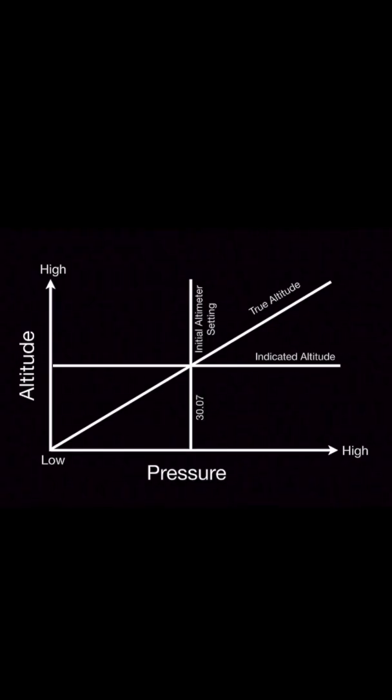The destination altitude setting was 29.95, lower than the initial setting. So we'll draw a new line to the left of the initial setting line. We can now see that if the new pressure is lower than the original pressure, true altitude will be lower than indicated altitude. Or put another way, the airplane will be lower than the altimeter indicates.